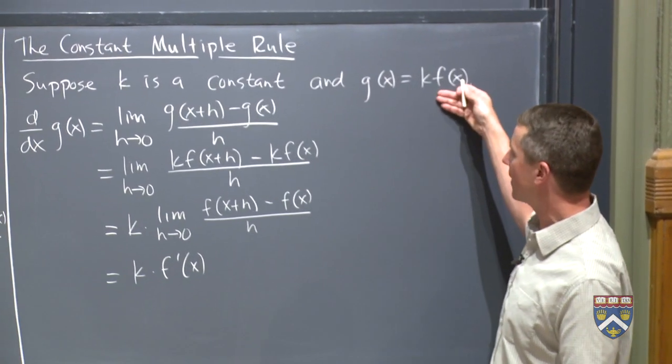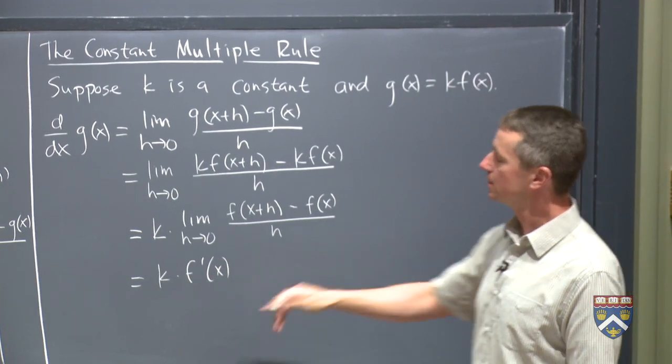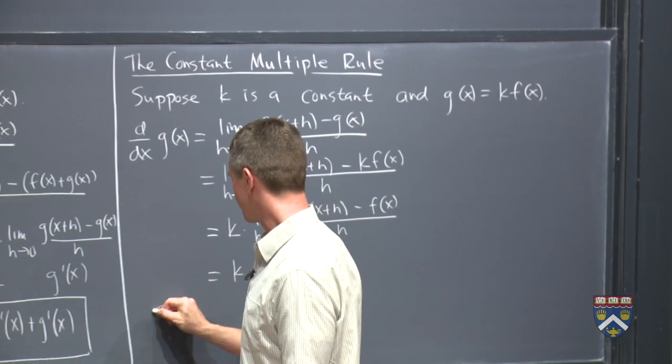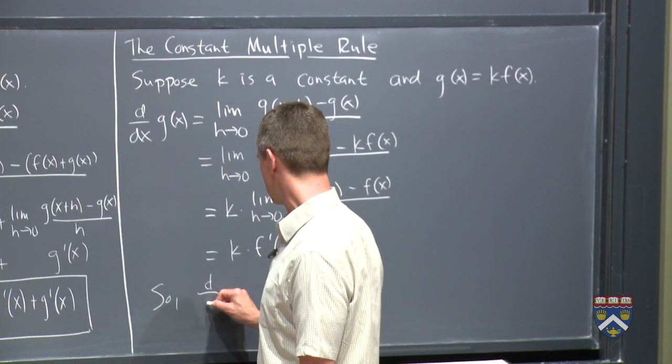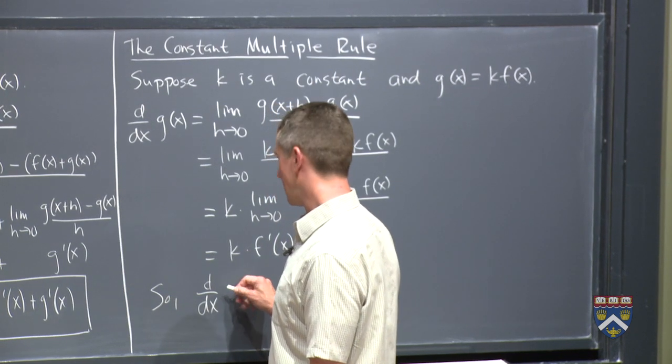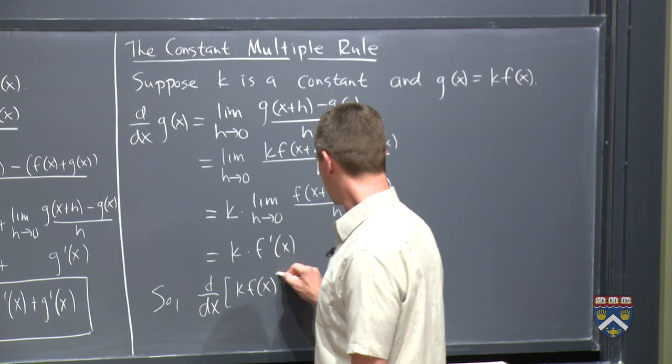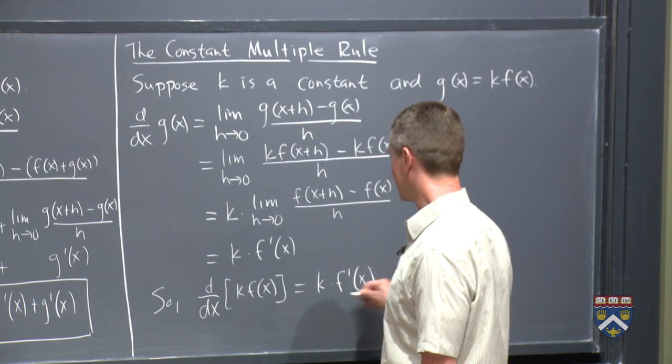It's saying that if you already know the derivative of f is f prime, and now you look at three times f, the derivative will be three times the f prime that you already had. So to summarize that, our constant multiple rule, the derivative of k f of x is k times f prime of x.